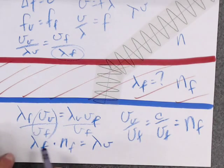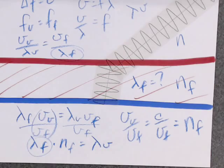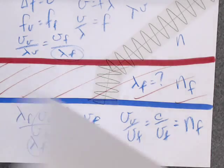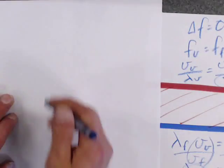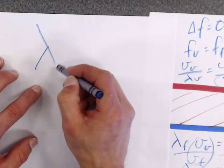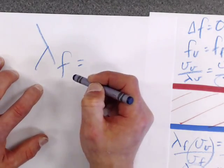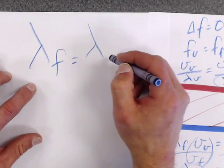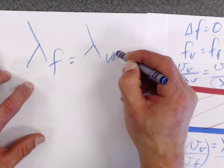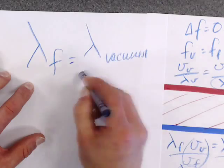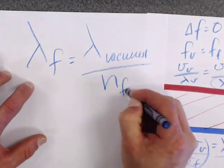So in order to find out what lambda F is, what we get is the lambda inside the film is equal to the lambda in the vacuum, or in this case, the lambda in the vacuum divided by the index of my film.